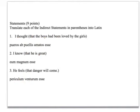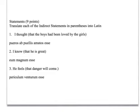'I thought that the boys had been loved by the girls.' Again, indirect statement — don't translate 'that.' The subject is in the accusative. 'Had been loved by the girls' — any time you have 'had been,' you're going to use a perfect infinitive. 'Had been loved' would be the perfect passive infinitive. Notice the ending agrees with boys. 'By the girls' would be an ablative of agent.